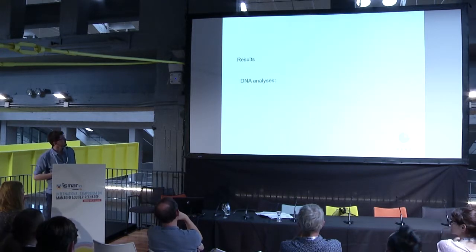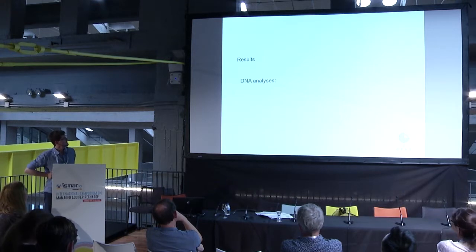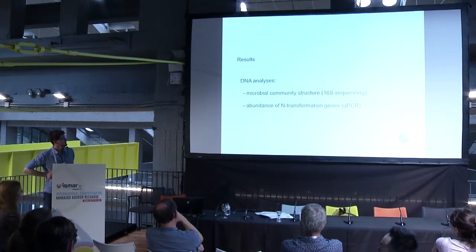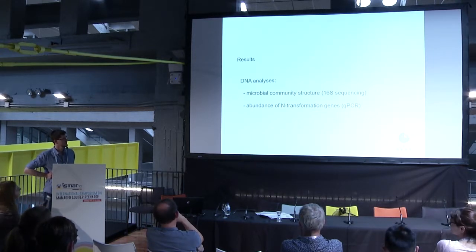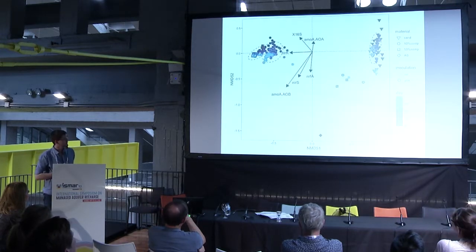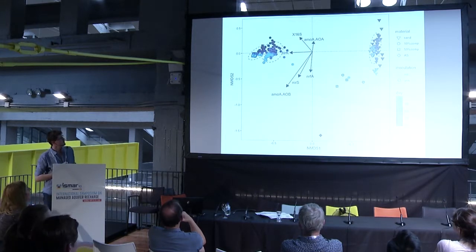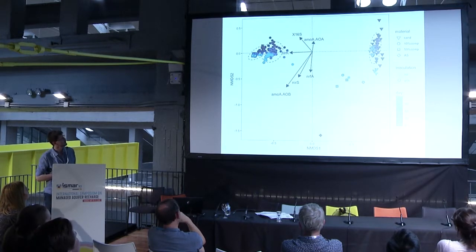Now coming to some DNA analysis — this is fairly fresh data and analysis is still ongoing. We have analyzed both microbial community structure based on 16S rRNA gene sequencing and also the abundance of genes responsible for nitrogen transformations, done with qPCR. I present only one plot here — an MDS plot combining both sequencing data, shown as blue symbols, and qPCR results, which are the arrows.